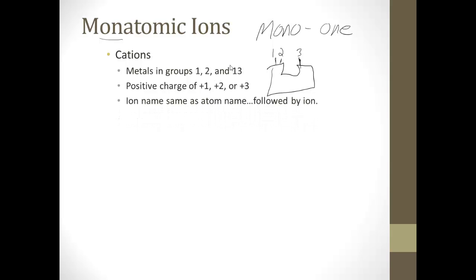And naming these are very easy. The ion name is the same as the atom name followed by the word ion. So sodium would become a sodium ion. Calcium would become a calcium ion. And this we've been talking about for quite some time. So that part shouldn't be too difficult at all.